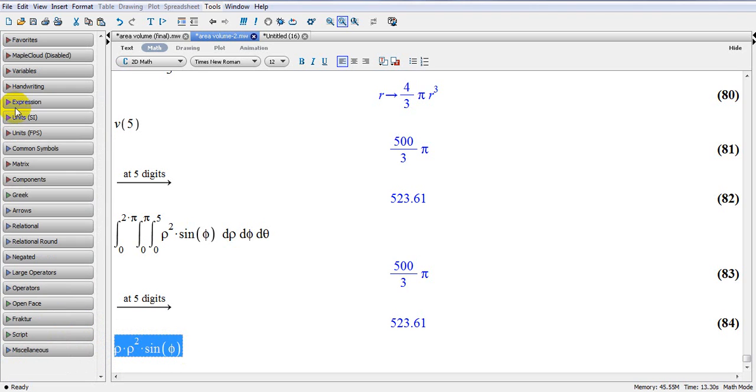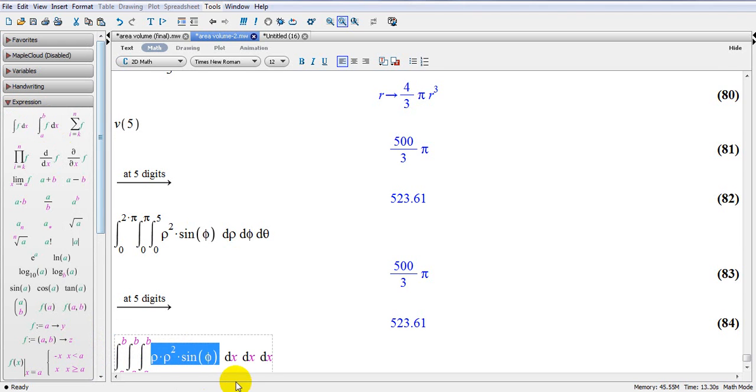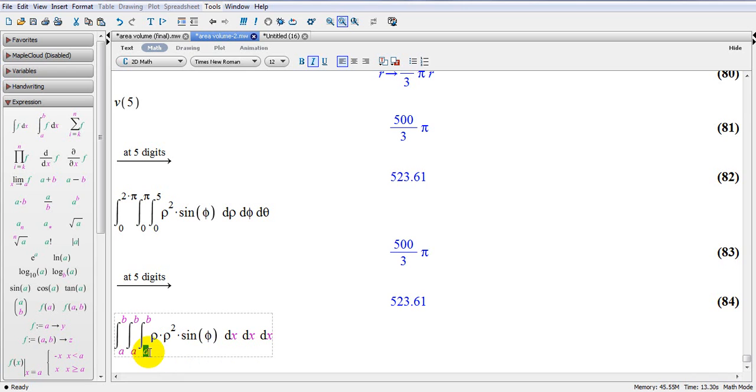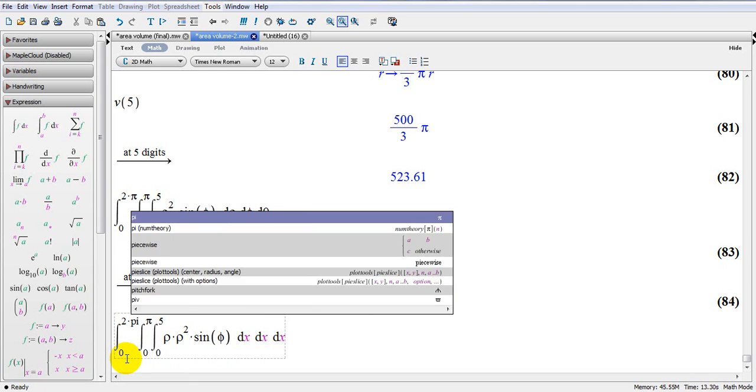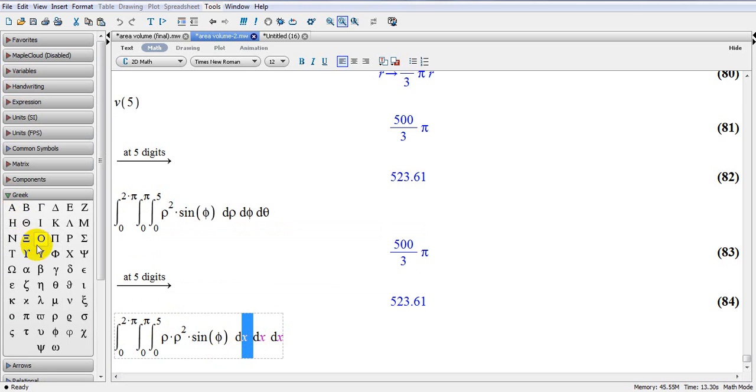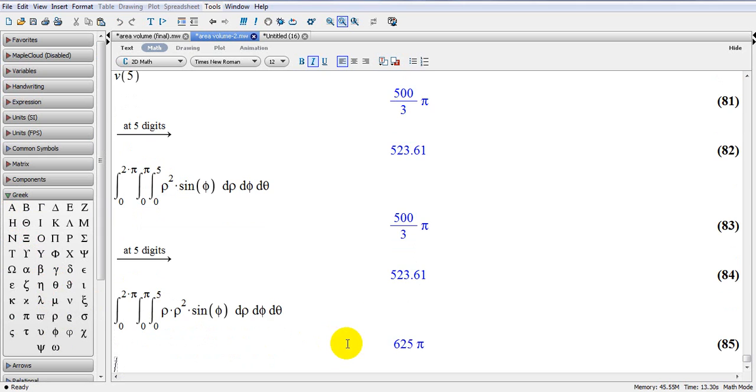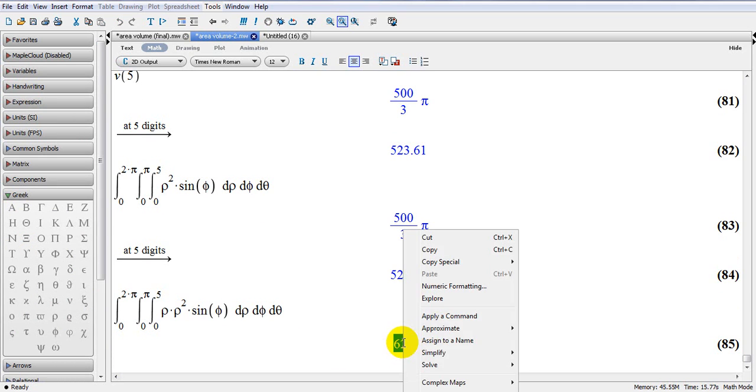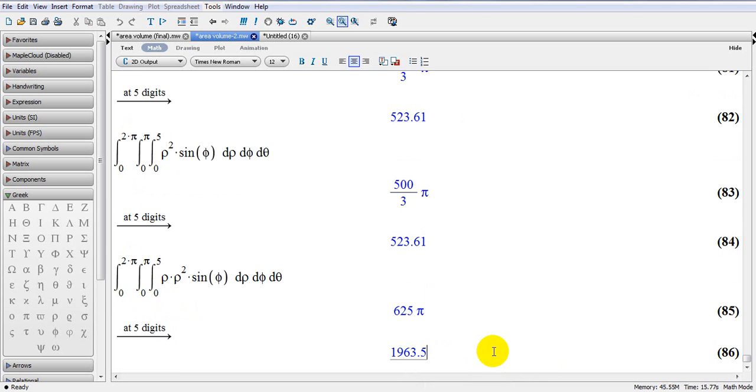So now I want to do a triple integration here. I go here to expression. Same thing from 0 to 5. We go from 0 to pi. And here from 0 to 2 multiply by pi. And of course, here I have to change this to rho. Next one is phi. And next one is theta. And enter. So you can see the answer is significantly higher, obviously, because the material will become much denser.